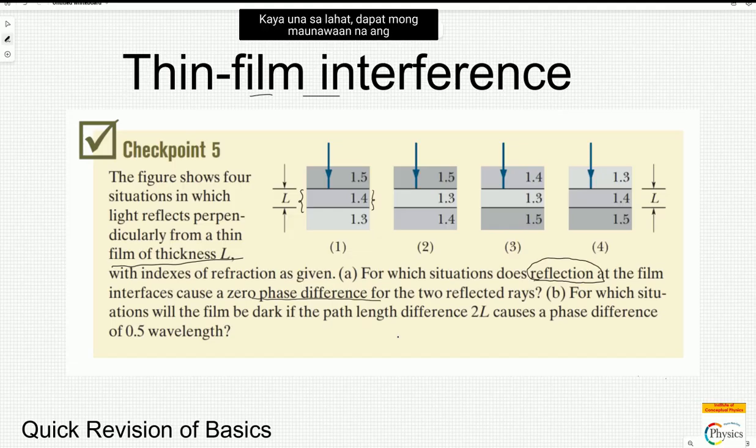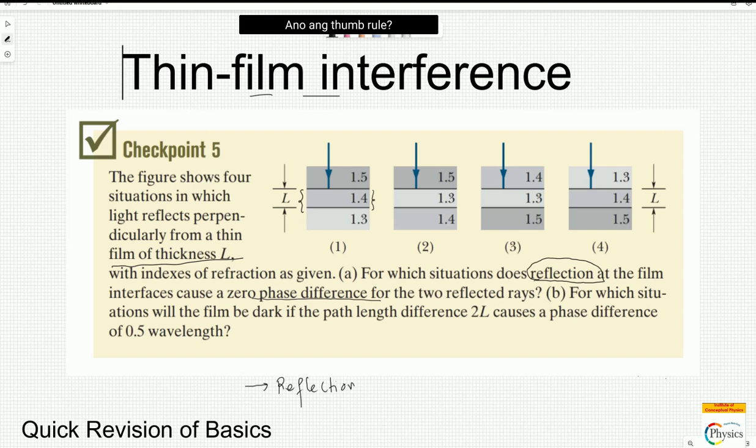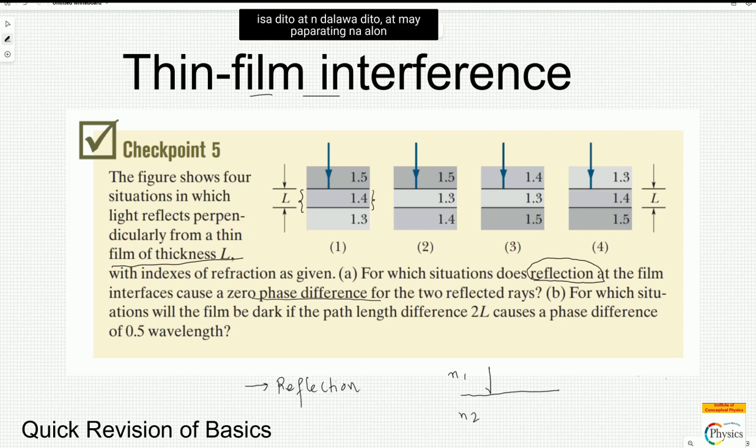First of all, you must understand that the phase difference happens because of reflection also. How does it happen? What is the thumb rule? The rule is if you have a refractive index of N1 here and N2 here and a wave is coming like this, N1 is less than N2, 180 degree phase difference reversal.